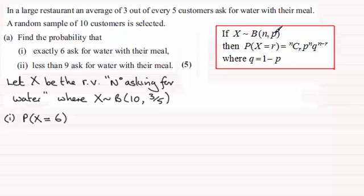if X is distributed binomially, N trials, probability of P is success, then the probability of X equals R is equal to NCR, P to the power R, Q to the power N minus R, where Q is equal to 1 minus P. And if you're unfamiliar with this, do go back and check my video tutorials on this.